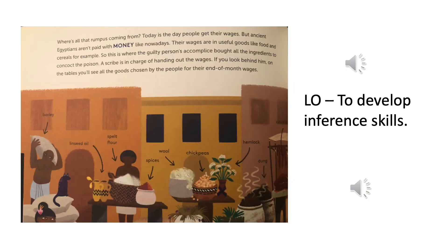Where's all that rumpus coming from? Today is the day people get their wages, but ancient Egyptians aren't paid with money like nowadays — their wages are in useful goods like food and cereals. This is where the guilty person's accomplice bought all the ingredients to concoct the poison. A scribe is in charge of handing out the wages. If you look behind him on the tables you'll see all the goods chosen by the people for their end-of-month wages: foods, barley, linseed oil, spelt flour, spices, wool, chickpeas, hemlock, dung, cuts of beef, and papyrus.